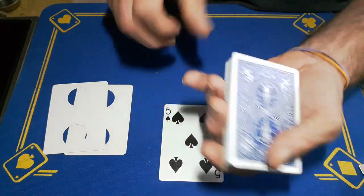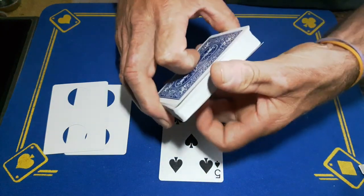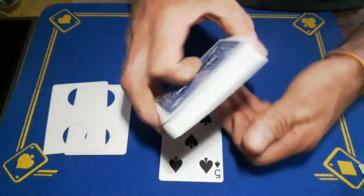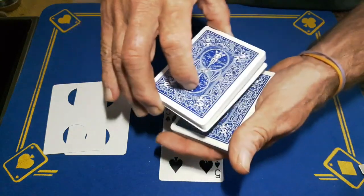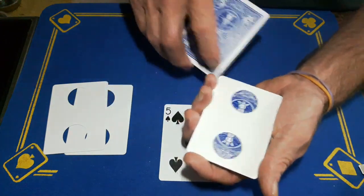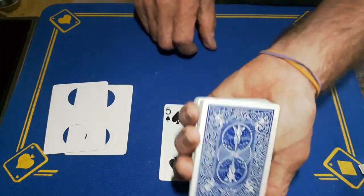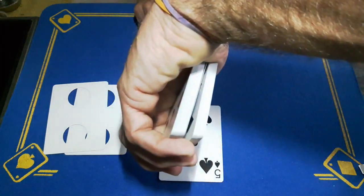Which is get a little pinky pull down on that very bottom card, turn it into a thumb break so you're in this position. You're going to swing cut the top portion of cards, putting these two cards together. And now what you've got is your other card on the top of this packet with a break above it.